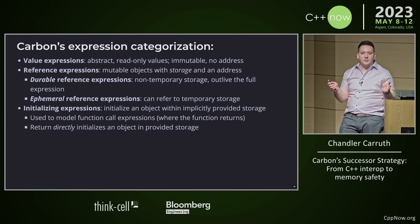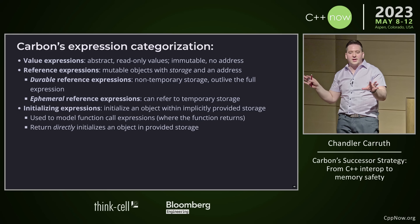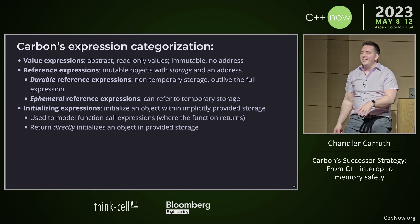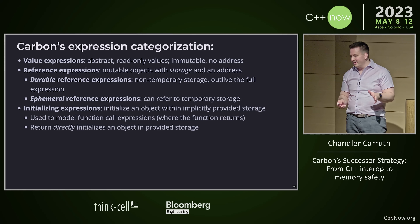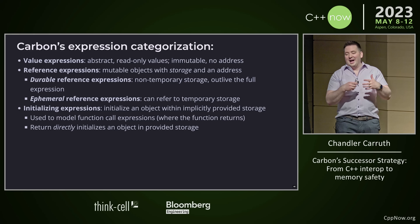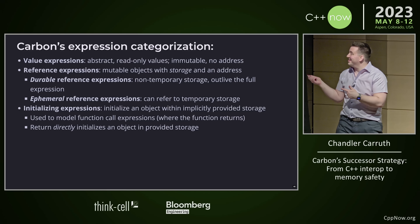You actually allocate the storage for the return object and you hand that storage to the function you're calling. That function goes along, initializes an object in that storage, and then returns. Now you have the return value in the storage. We're baking this directly into the language because it allows us to model all of our initialization — basically giving us RVO and guaranteed elision and all of that stuff with returns baked directly into the language with really precise semantics.